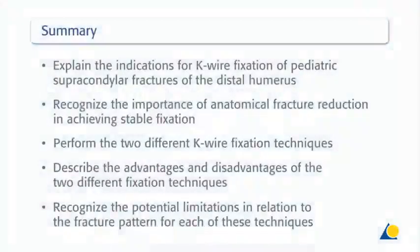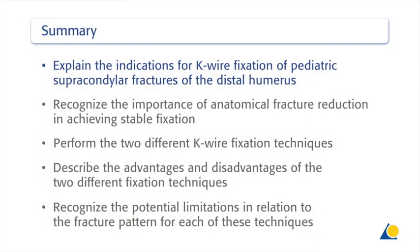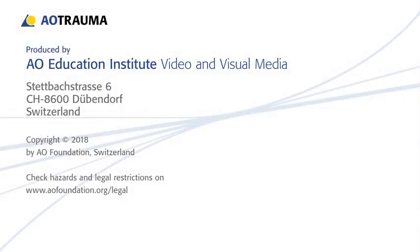You should now be able to explain the indications for K-wire fixation of pediatric supracondylar fractures of the distal humerus, recognize the importance of anatomical fracture reduction in achieving stable fixation, perform the two different K-wire fixation techniques, describe the advantages and disadvantages of the two different fixation techniques, and recognize the potential limitations with both techniques in relation to the fracture pattern.